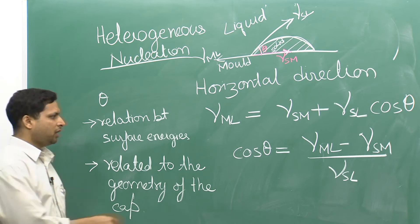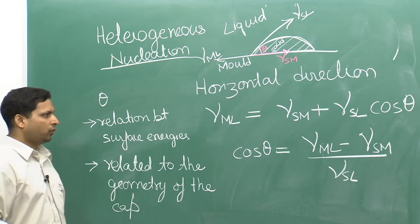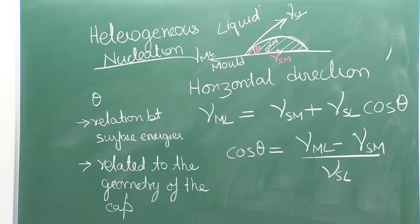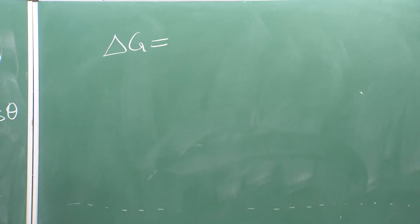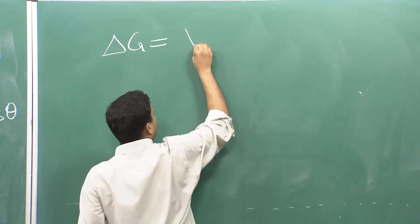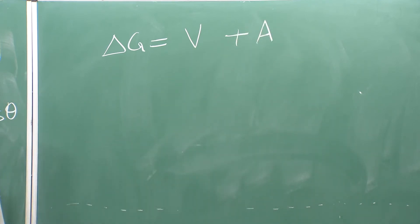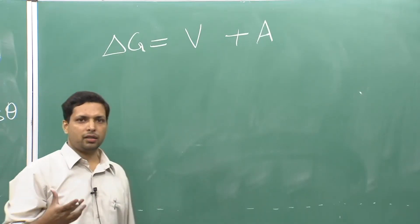Because θ serves two purposes, it also makes our job easier, and we can see that the ΔG for this heterogeneous nucleation will have a volumetric term and an area term. The volumetric term reduces the overall energy and the area term increases it.